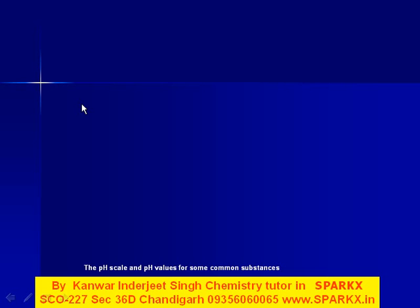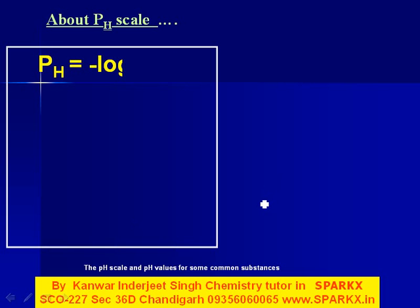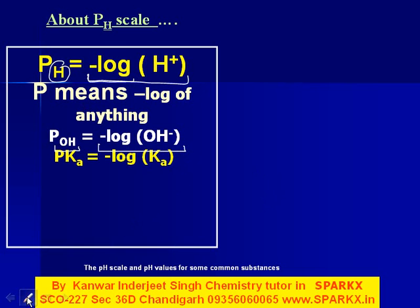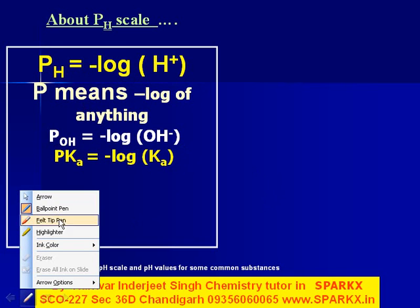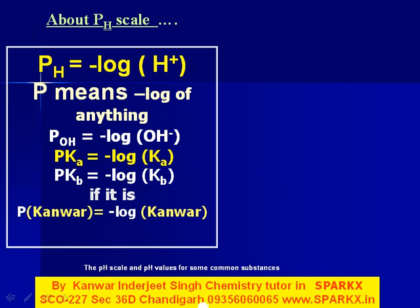Let's discuss pH. First of all, we should know what we mean by 'p'. The 'p' means negative log of anything. So if it is pH, it will be negative log of H⁺. If it is pOH, it will be negative log of OH⁻. For pKa, it will be negative log of Ka. For pKb, it will be negative log of Kb.